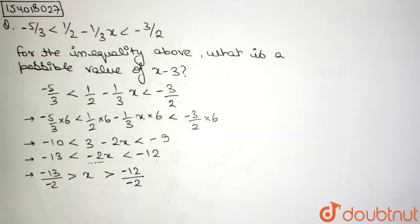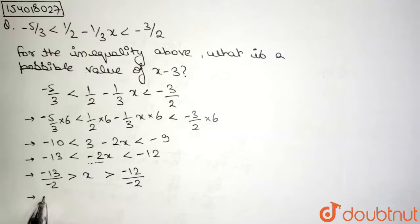Now let us simplify this. What do we obtain? 6.5 is greater than x is greater than 6, right? What is the possible value of x minus 3? So if there would have been asked what is the possible value of x, it would have lied in this range 6 to 6.5.